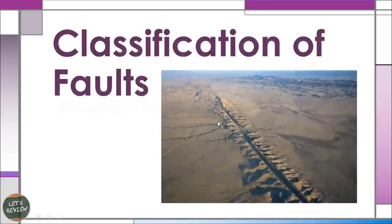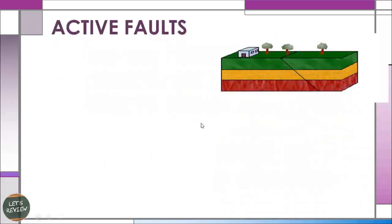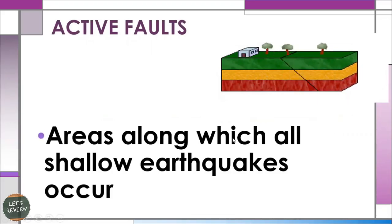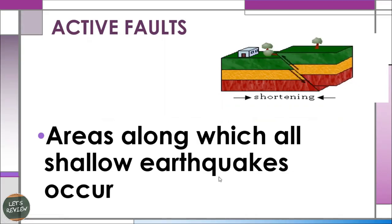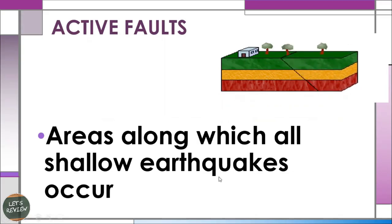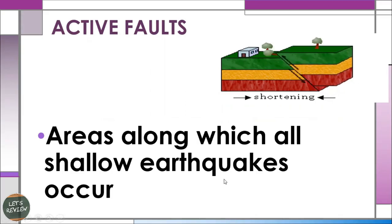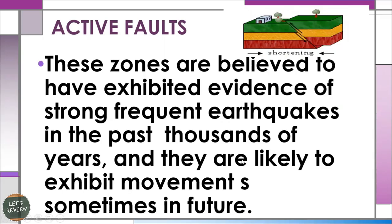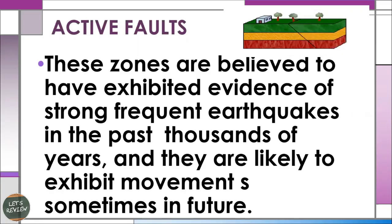Let us classify the different types of faults. The first example is the active fault. This is the area along which shallow earthquakes occur. Earthquake depth depends on how deep the focus is — we have shallow, intermediate, and deep faults. These zones are believed to have exhibited evidence of strong, frequent earthquakes in the past thousands of years, and are likely to exhibit movements in the future.